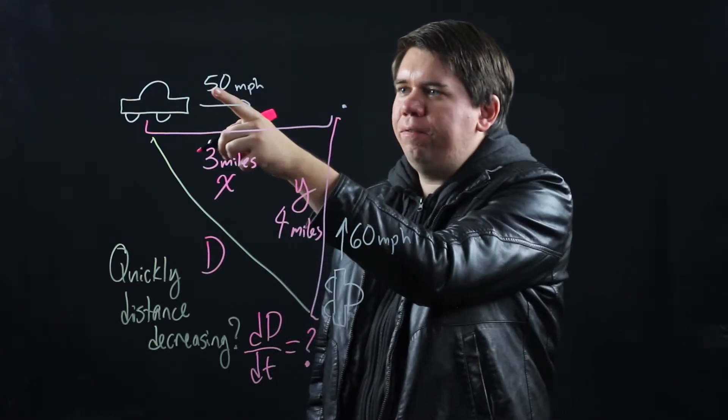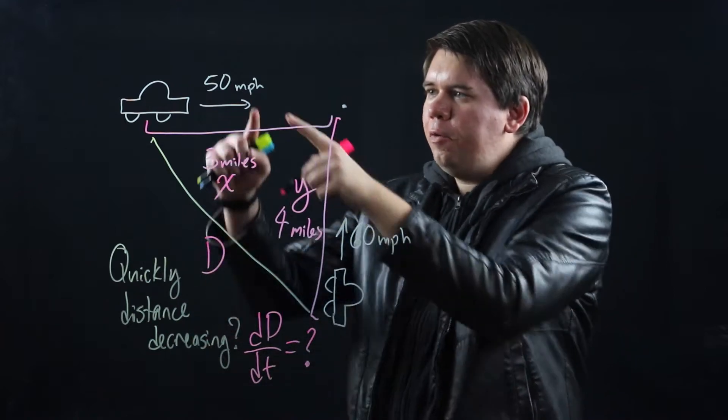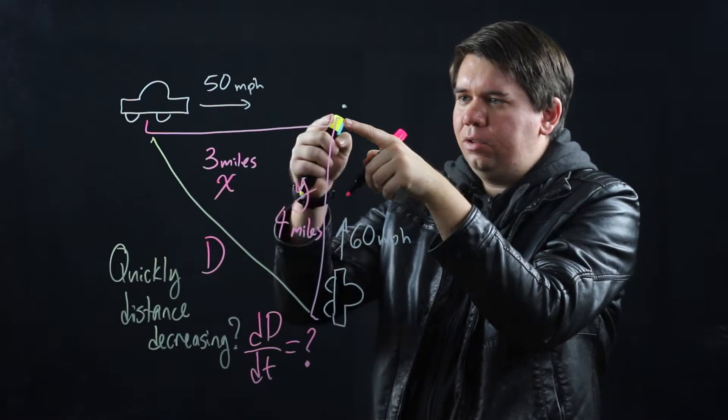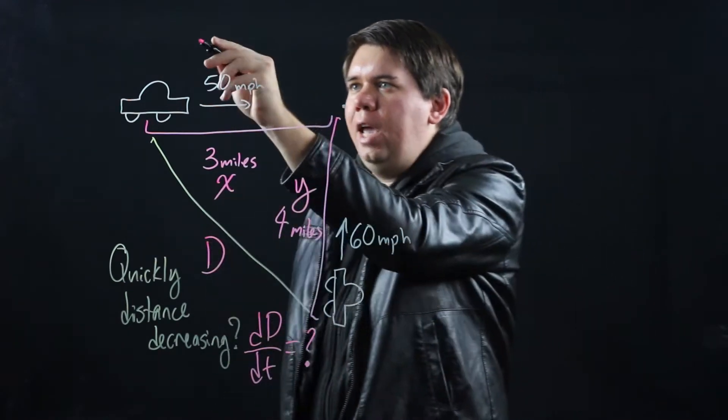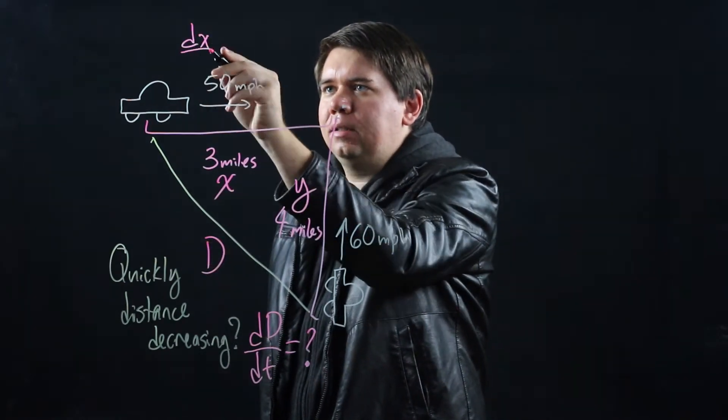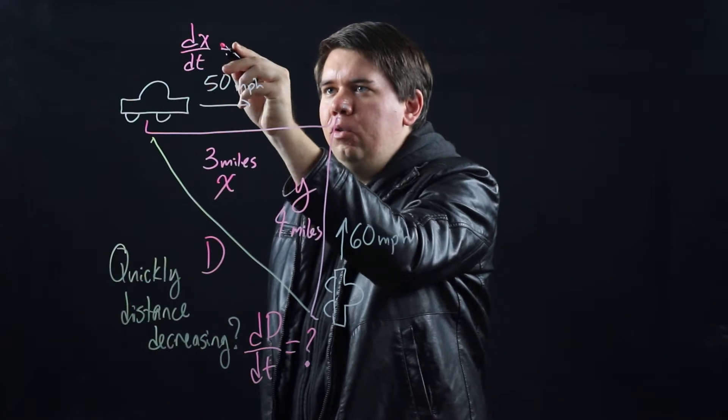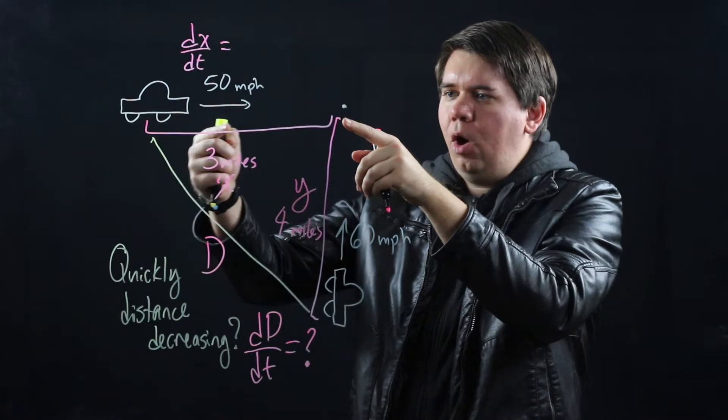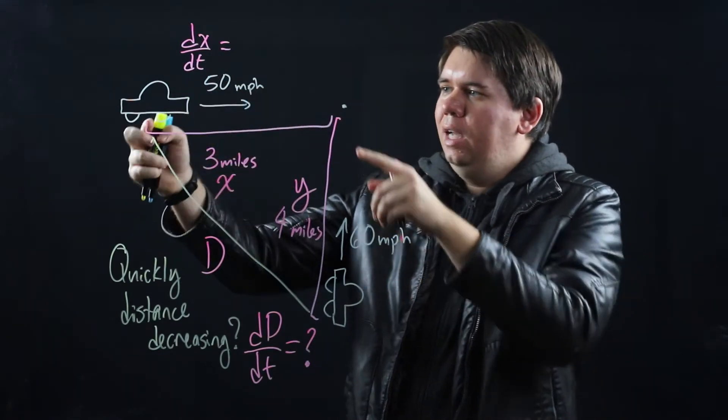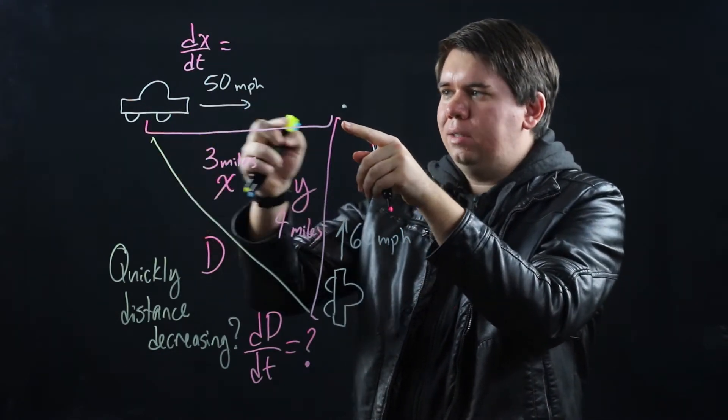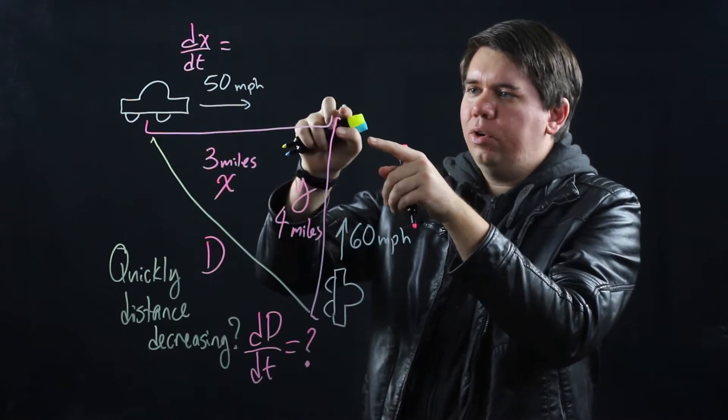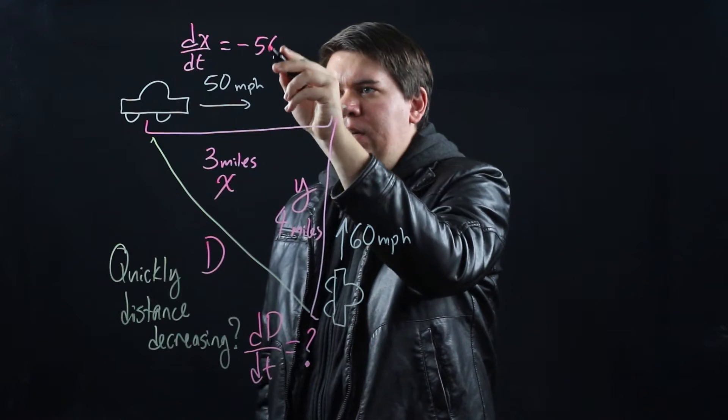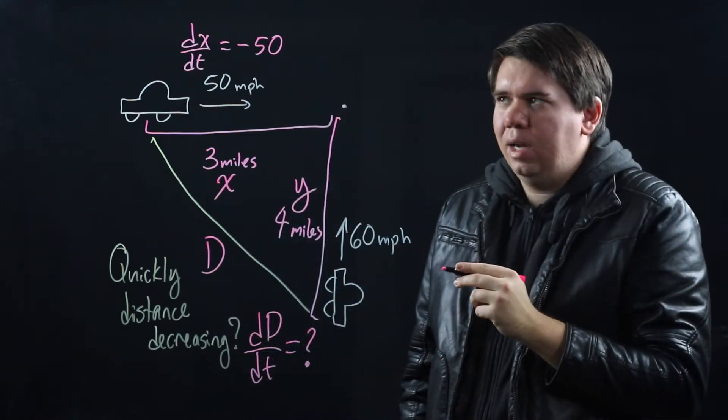Then if you go in at 50 miles per hour, that would be a change in your distance, right? The faster you go, the quicker your distance is decreasing. So the change in x over time would be what? Was it 50? Not quite, because actually your distance is getting smaller, right? This is measuring how much the distance is decreasing because you're driving towards the intersection point. So your change in x over time is actually negative 50, negative 50 miles per hour.